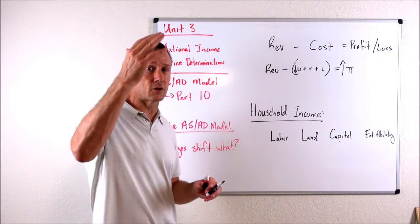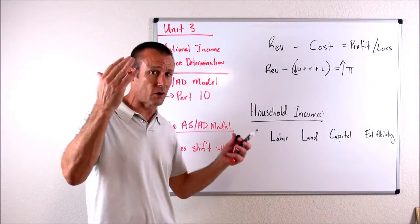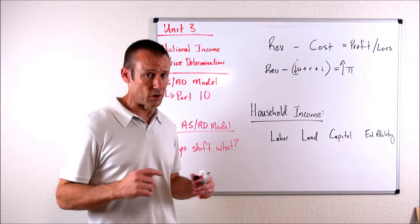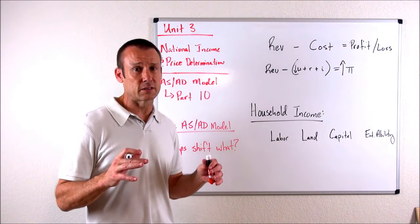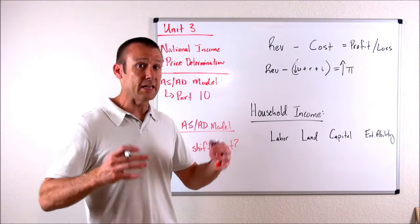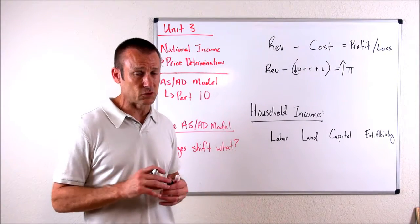Personal income taxes go up - if personal income taxes go up, consumption's going to drop, AD is going to shift. If personal income taxes go down, consumption increases and AD will shift.